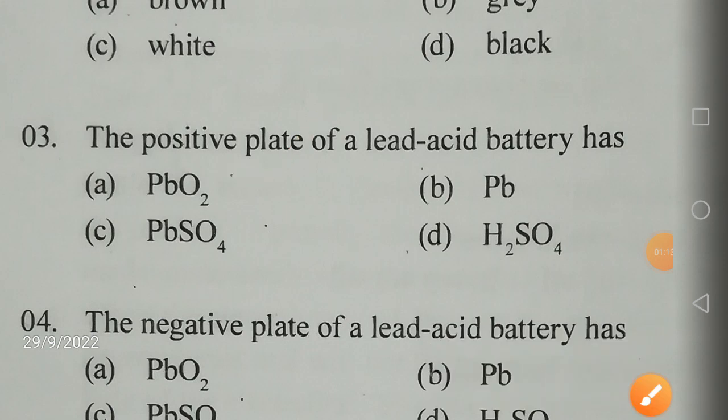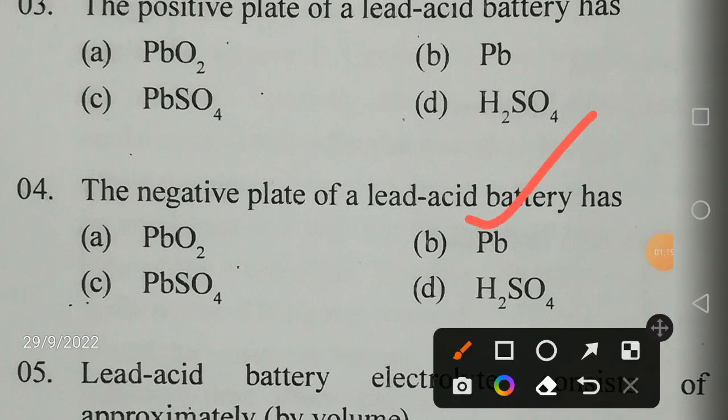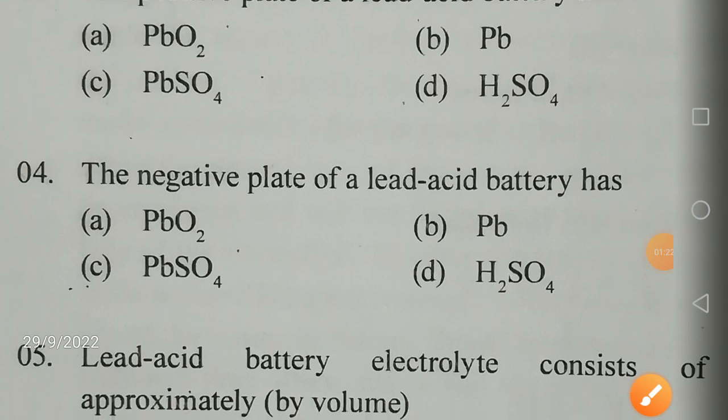Pb means lead. The negative plate of a lead acid battery has Pb, which is lead. Please remember it correctly.